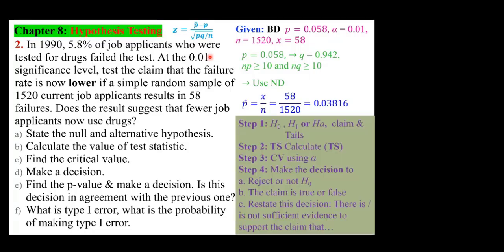Here's the test of hypothesis. Generally speaking, it has four steps. First, write down H₀ (the null hypothesis) and H₁ or Hₐ (the alternative hypothesis), noting where the claim goes and whether we have a left-tail, right-tail, or two-tail test. Second, calculate the test statistic. Third, calculate the critical value or use the P-value. Finally, make a decision — reject or fail to reject H₀.